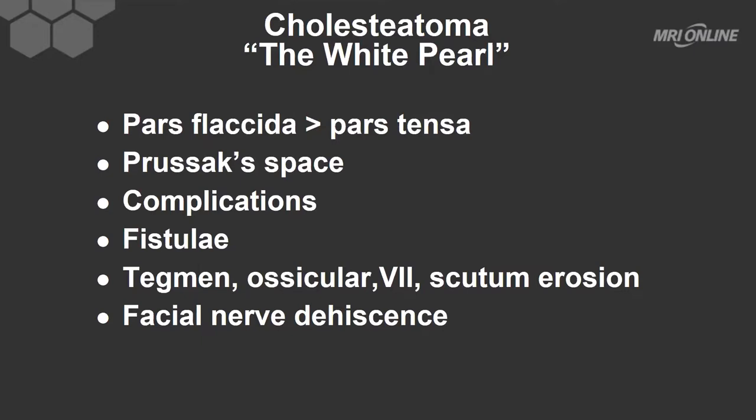The portion of the tympanic membrane that is usually affected is the pars flaccida. The pars flaccida is the larger, more superior portion of the tympanic membrane. The inferior and posterior portion is called the pars tensa. It is said that 80% of cholesteatomas occur due to ingrowth through the pars flaccida.